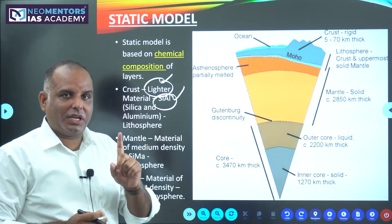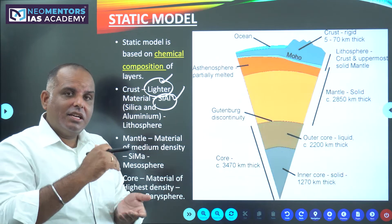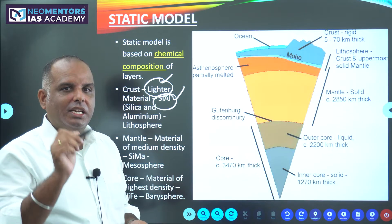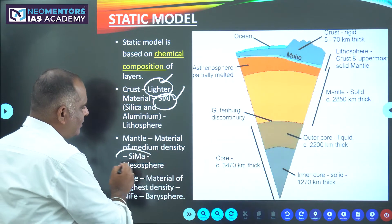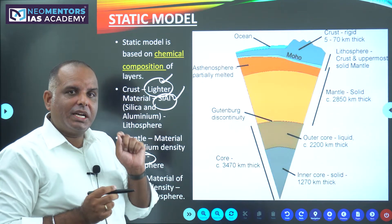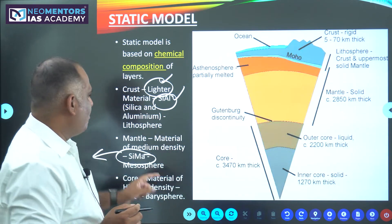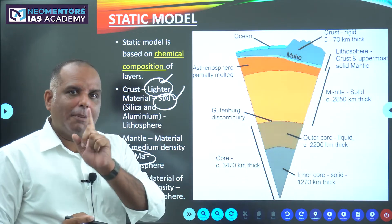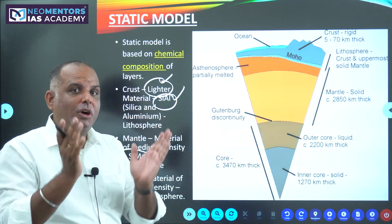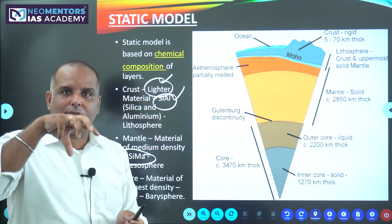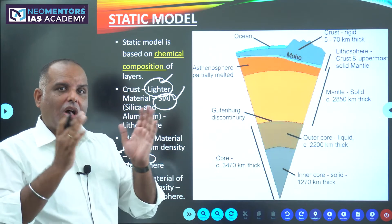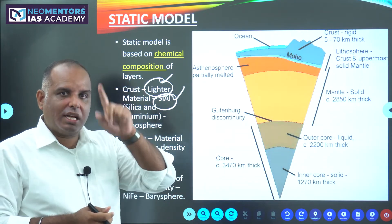We also call the crust as lithosphere. The second layer is mantle. Mantle is made up of silica and magnesium — that is why we call it SEMA. Mantle is made up of material of medium density. Then finally, we have core. Core should be made up of heavier material because it is the innermost. We were talking about sorting of layers based on density — since core is the innermost layer, it should have materials of higher density.